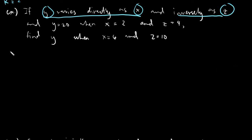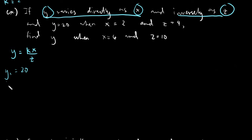Let's identify the formula equation. y is equals to k times x over j — directly as x means x is above, and inversely as j means j is below. First set: y sub 1 is equals to 20, x sub 1 is equals to 2, and j sub 1 is equals to 4.